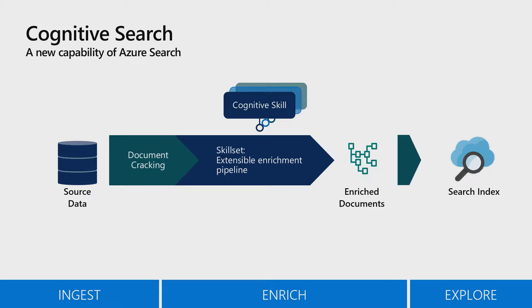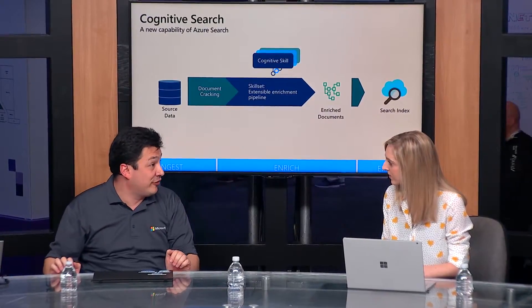We have a ton of built-in skills that you can run your documents through. Maybe you want to find printed text in images or handwritten text, or maybe extract different types of entities such as organizations, locations, and places from the text in order to get structure. Now that you have structured information, this tree of information, you can feed it into a searchable index.